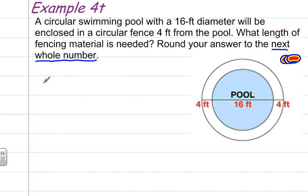So to do this, we're going to be using the formula for the circumference. The circumference is equal to pi times the diameter.